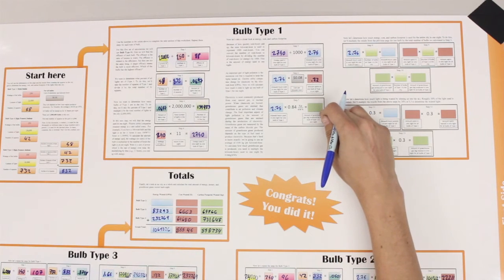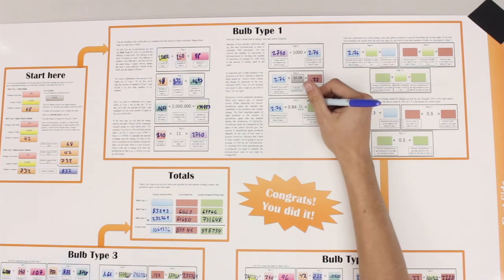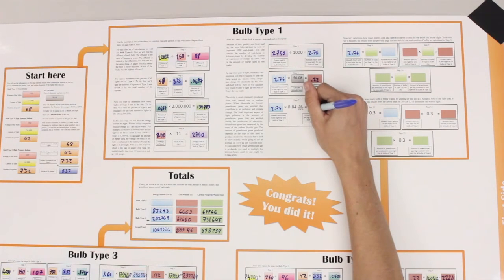In this box, this gives the total amount of greenhouse gas that's produced by one night of one bulb.